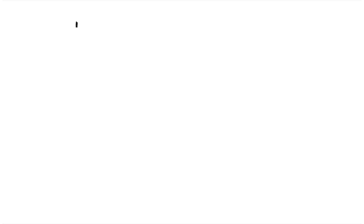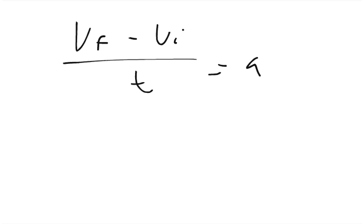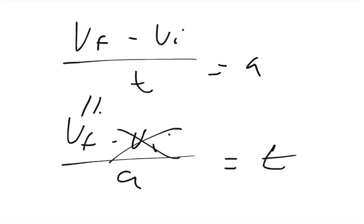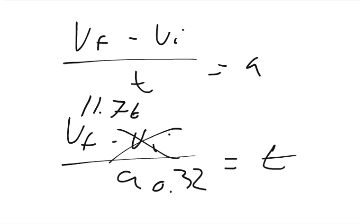Part C asks for the elapsed time. Using: a = (v-final − v-initial) / T, so T = (v-final − v-initial) / a. The initial velocity is 0, v-final from Part A is 11.76 m/s, and acceleration is 0.32 m/s². So T = 11.76 / 0.32 ≈ 36.75 seconds.